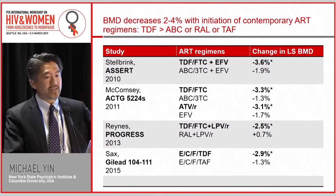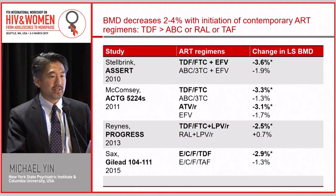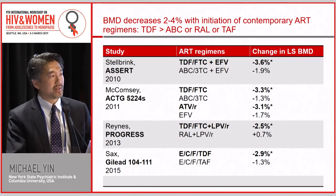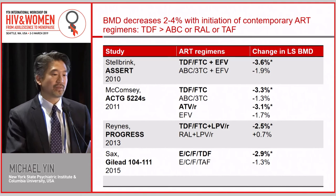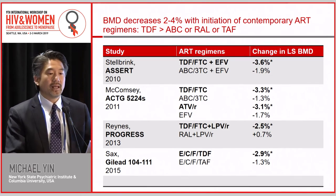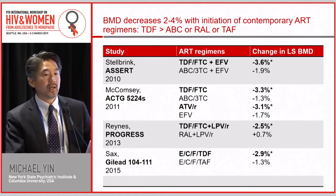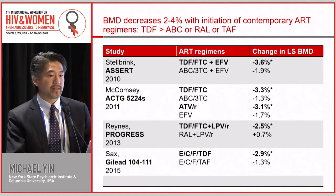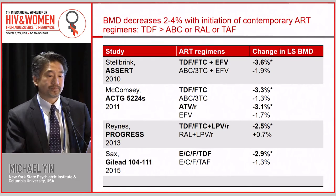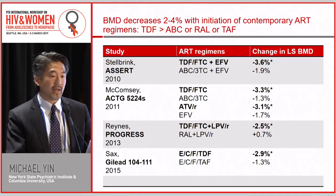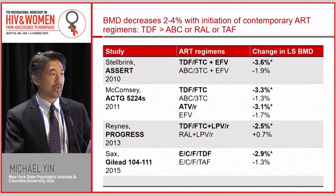When looking at differences by regimen, tenofovir disoproxyl fumarate — TDF — consistently shows a greater effect on bone than other NRTIs or integrase inhibitors. The last study shows the effect of the newer formulation, tenofovir alafenamide fumarate — TAF — and there is less effect on bone when TAF is used compared to TDF.